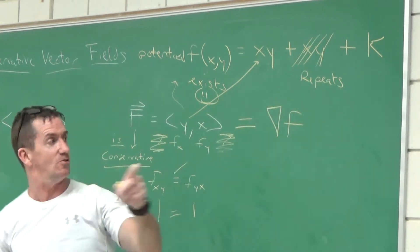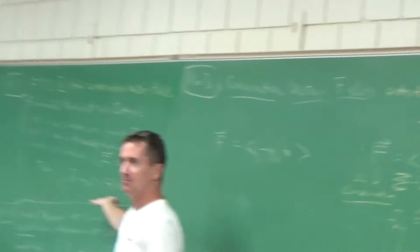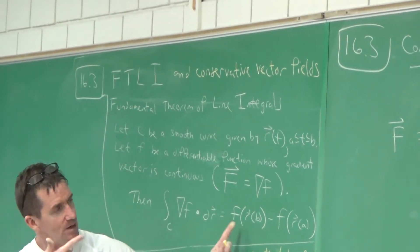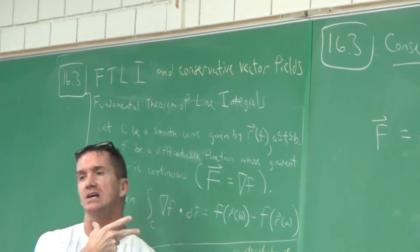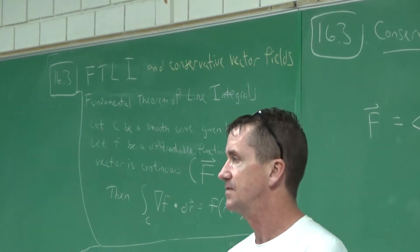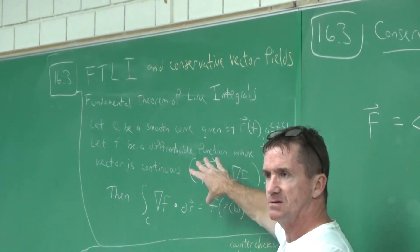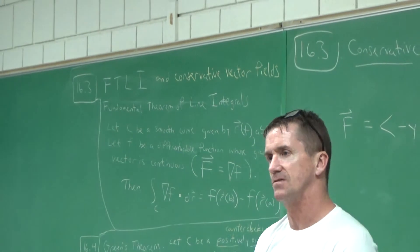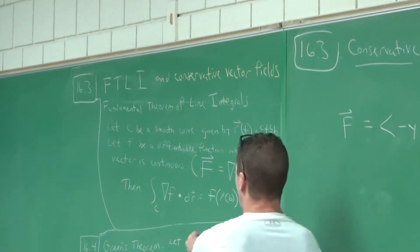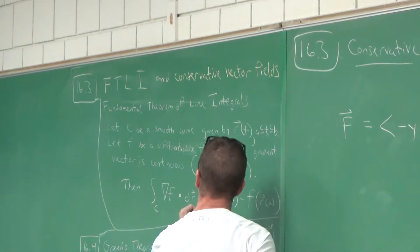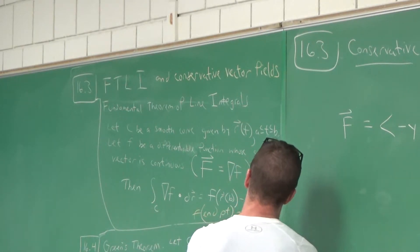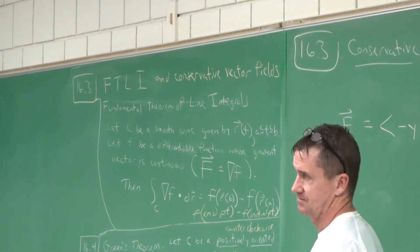When it comes to evaluating a line integral with that conservative vector field, it's going to be a piece of cake by this theorem. You can bypass all the parametric derivative math. All you need is the potential function, and then evaluate: F of the endpoint minus F of the initial point. That's all we have to do.